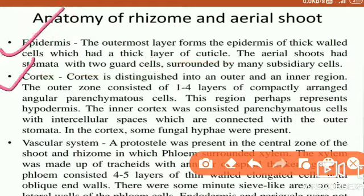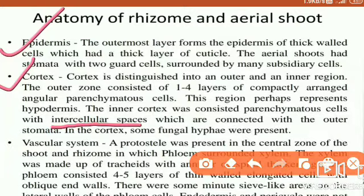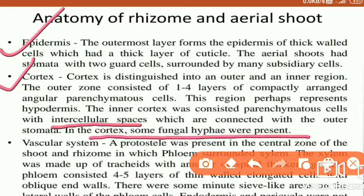The cortex is distinguished into an outer and inner region. In the outer region there are one to four layers of parenchymatous cells which are angular. In the inner portion there are also parenchymatous cells but with intercellular spaces, which are connected with the outer stomata. In the cortex, small fungal hyphae are present, and importantly the cortical portion has a symbiotic relationship with these hyphae.